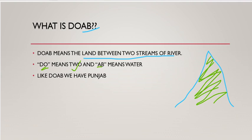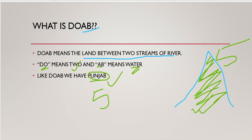So doab means the land between two streams of a river. Here 'do' means two and 'ab' means water. Just like doab, we have Punjab — the naming of Punjab was done similarly: 'Punj' means five and 'ab' means water. So Punjab land is formed of five doabs, meaning five pieces of land. That is why the name of that land is Punjab.